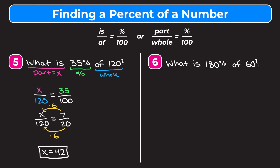Using cross multiplication: 20 times X equals 7 times 120, which is 840. Dividing both sides by 20 gives 840 divided by 20, which equals 42. So either way, we get that X equals 42.